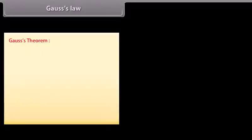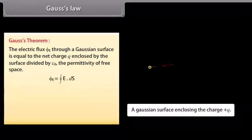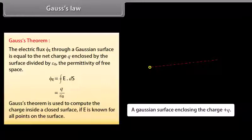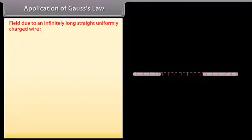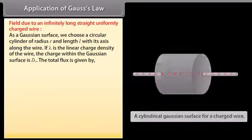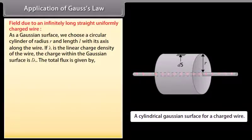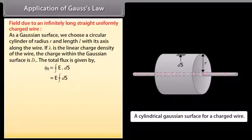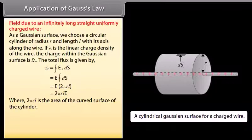Gauss's law: The electric flux φₑ through a Gaussian surface is equal to the net charge q enclosed by the surface divided by ε₀, the permittivity of free space. Gauss's theorem is used to compute the charge inside a closed surface if E is known for all points on the surface. Application — field due to an infinitely long straight uniformly charged wire: As a Gaussian surface, choose a circular cylinder of radius r and length l with its axis along the wire. If λ is the linear charge density, the charge within the Gaussian surface is lλ. Applying Gauss's theorem gives the electric field at radial distance r as E = λ / (2πrε₀).